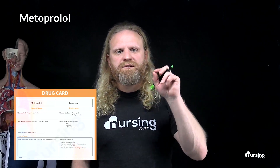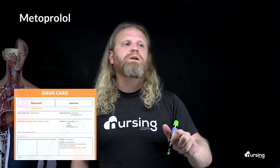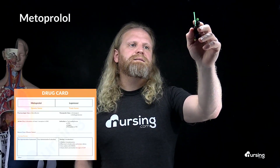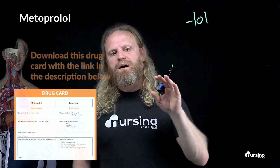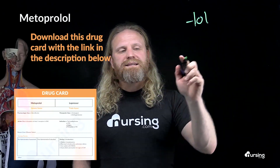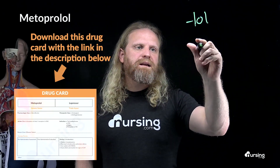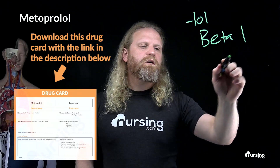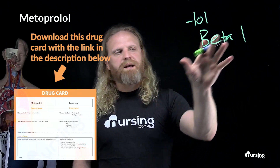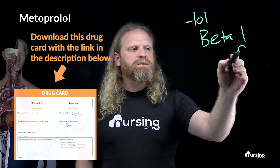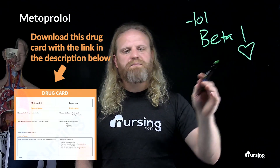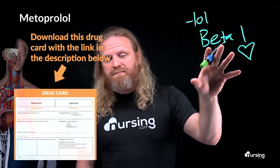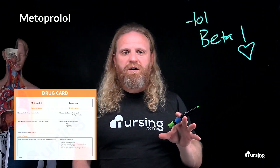The last medication is metoprolol. Metoprolol is a beta blocker — we know that because it ends in '-lol.' It specifically targets beta-1 receptors. A helpful memory trick: one heart, two lungs — beta-1 targets the receptors within the heart.